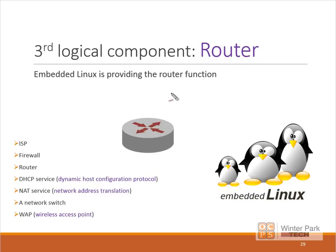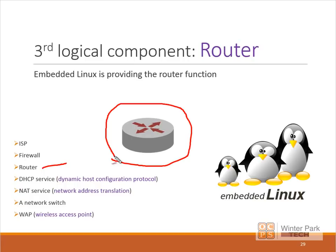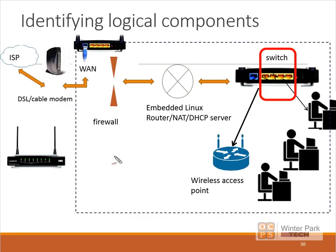Our third logical component is the actual router. Yes, the multi-function device really does have a router — embedded Linux is providing the router functionality. There is a router, but there is much more in that plastic box than just a router. The Cisco symbol for a router is typically shown here, and we're looking at the relationship of these various logical components: the firewall separates our router from the ISP.